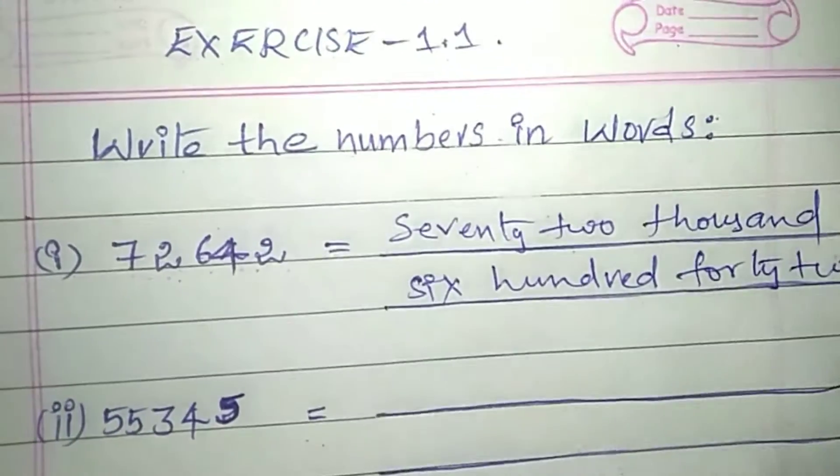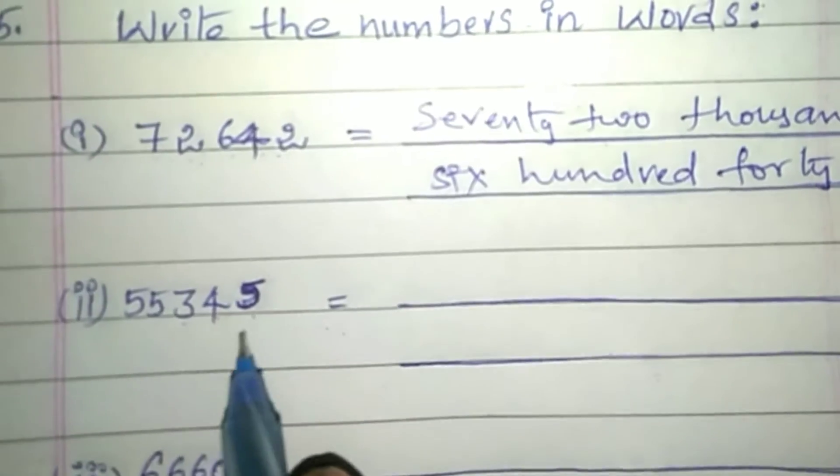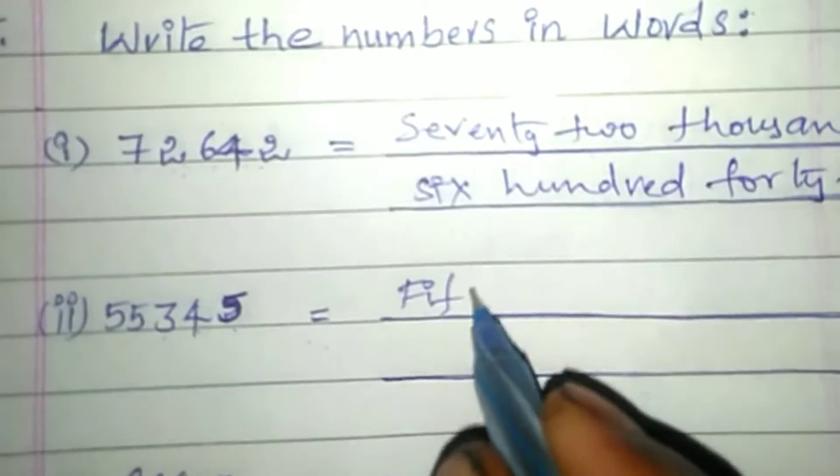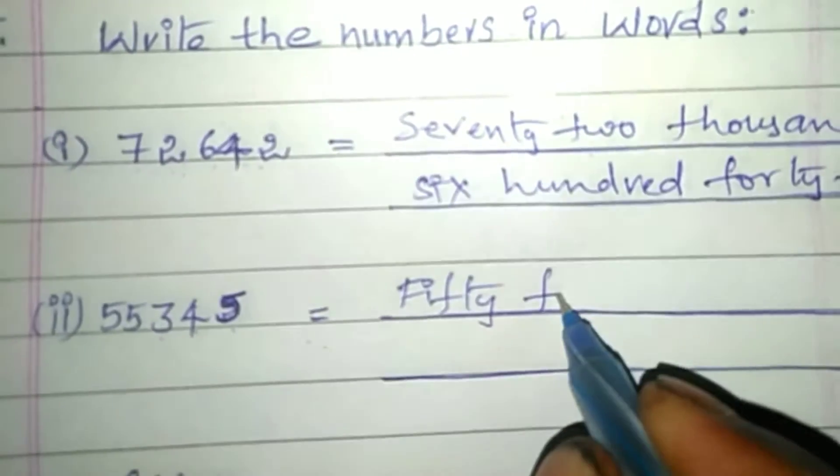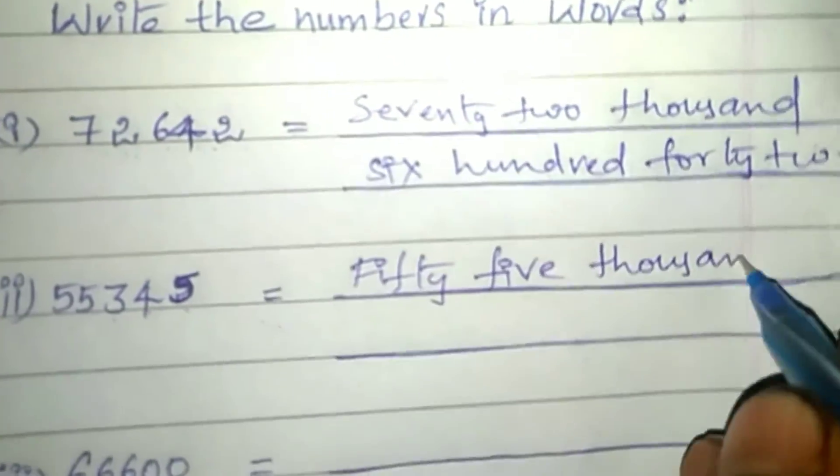72,642 equals seventy-two thousand, six hundred forty-two. Next one: 55,345.